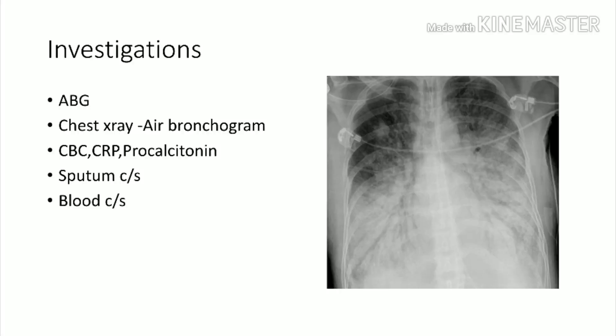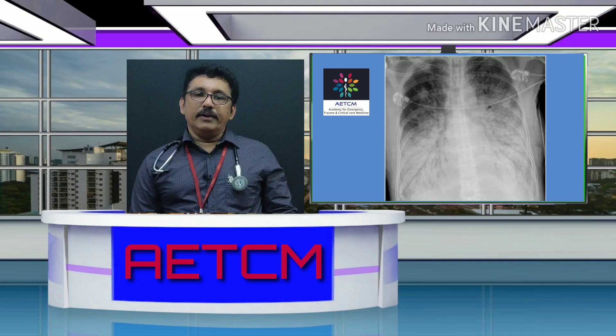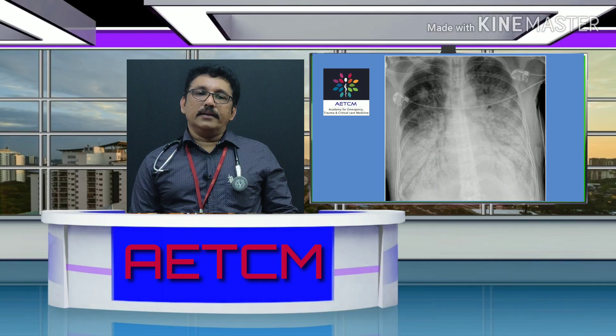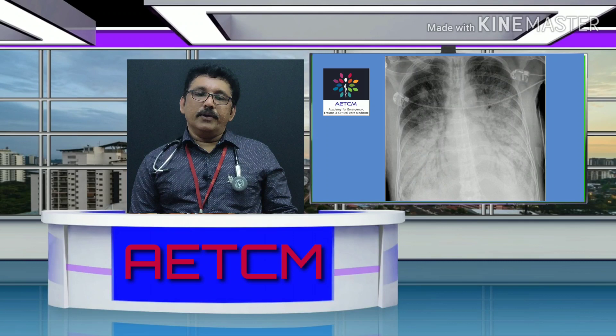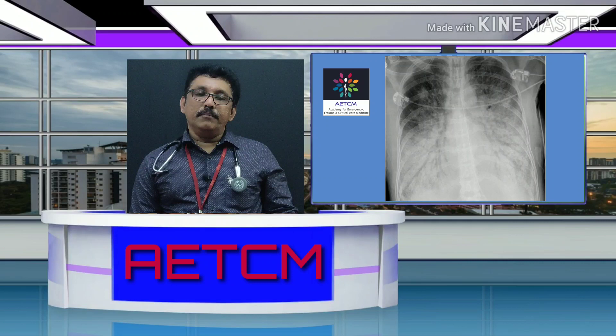On chest X-ray, once the patient is admitted to the emergency room, take an X-ray immediately for a suspected pneumonia case. The X-ray may show bilateral infiltration with air bronchogram — the lung fields appear completely white but you can see the bronchi like a tree. This is a typical feature of consolidation. In viral pneumonia, you can see extensive bilateral infiltrates; the differential diagnosis can even be ARDS.